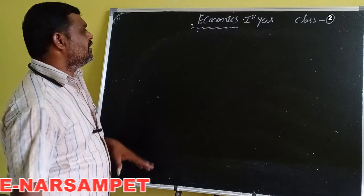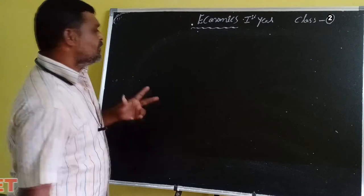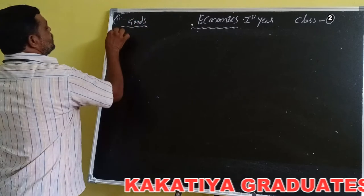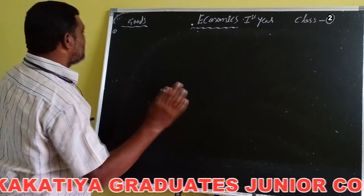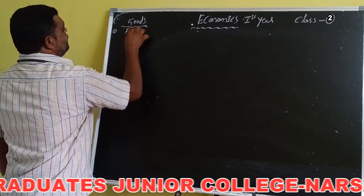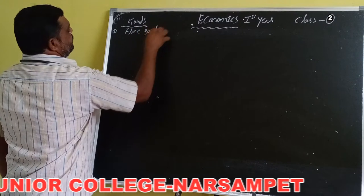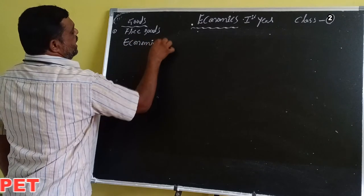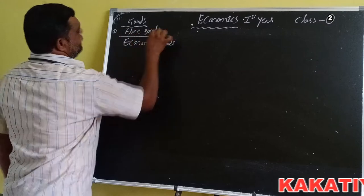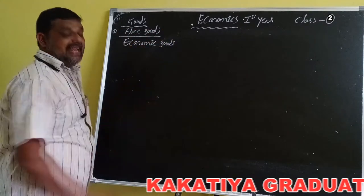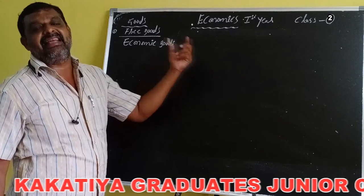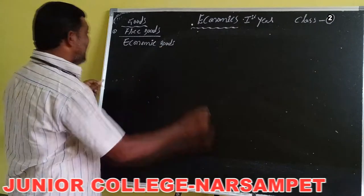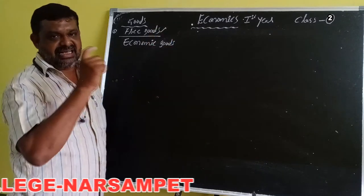Today we are discussing goods. There are two types of goods: number one, free goods, and number two, economic goods. Free goods means goods which can be freely supplied by nature and have no price. For example, sunshine and air.